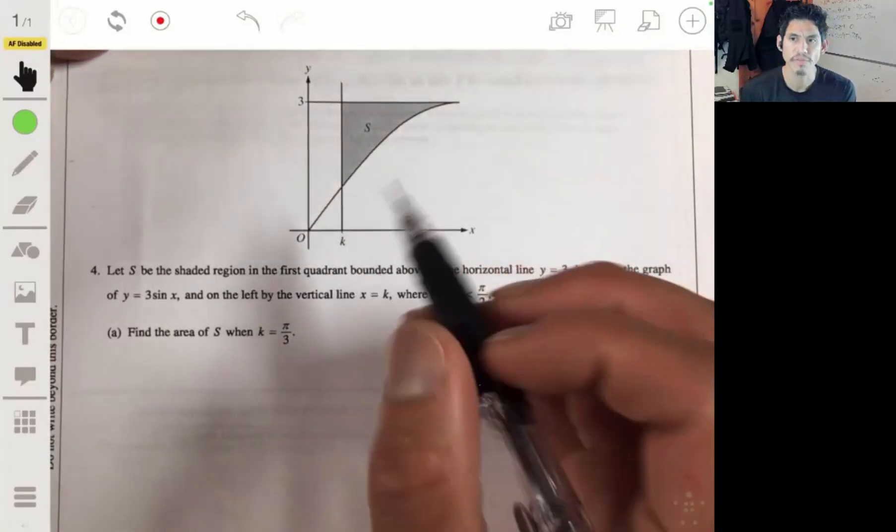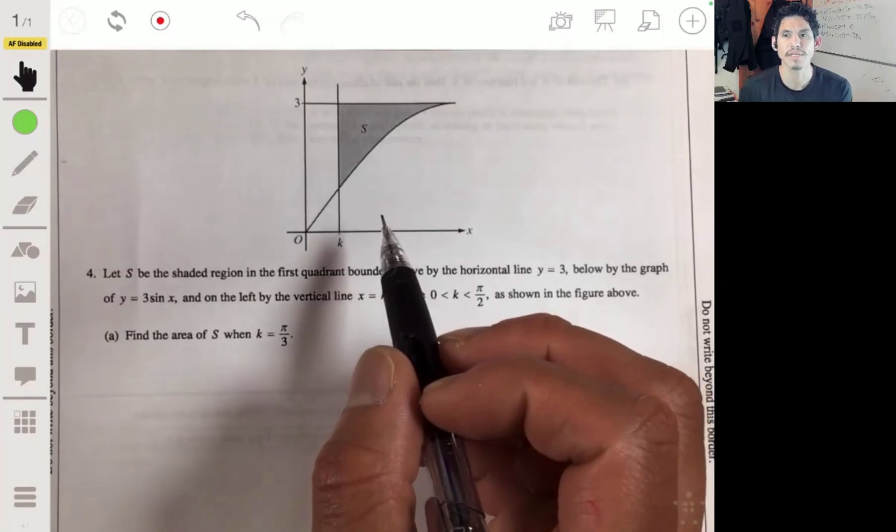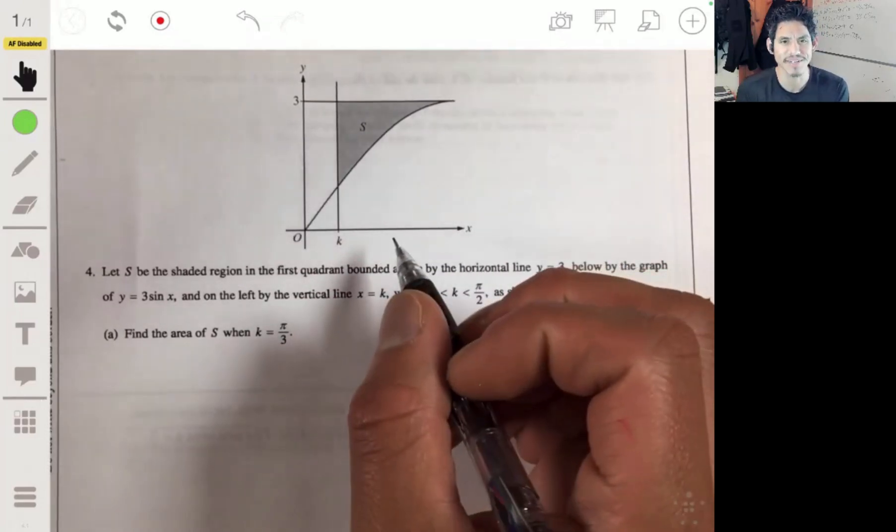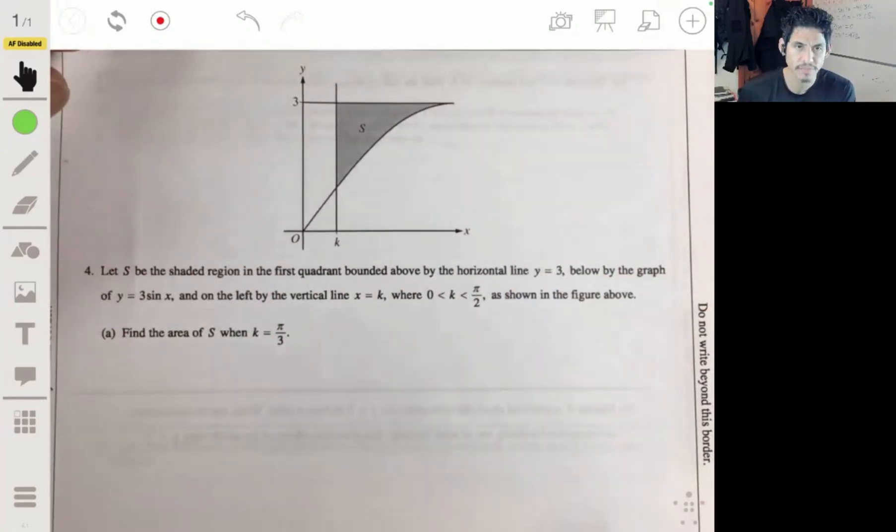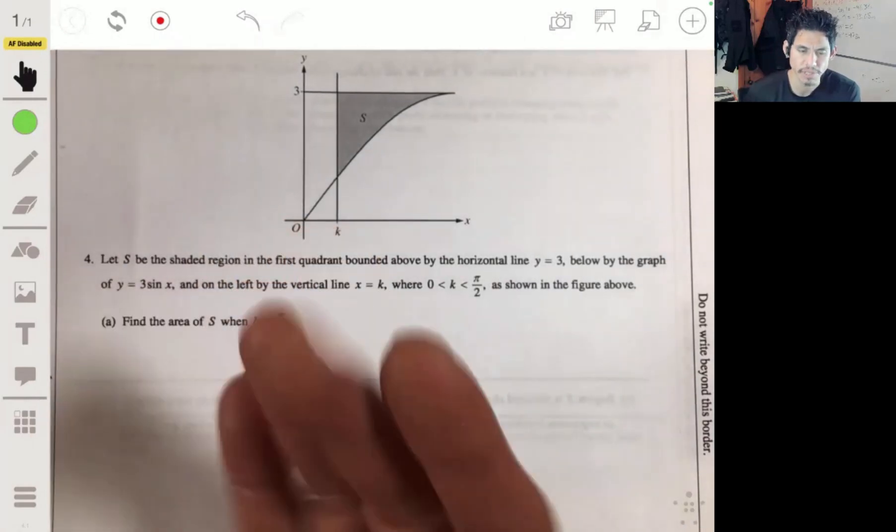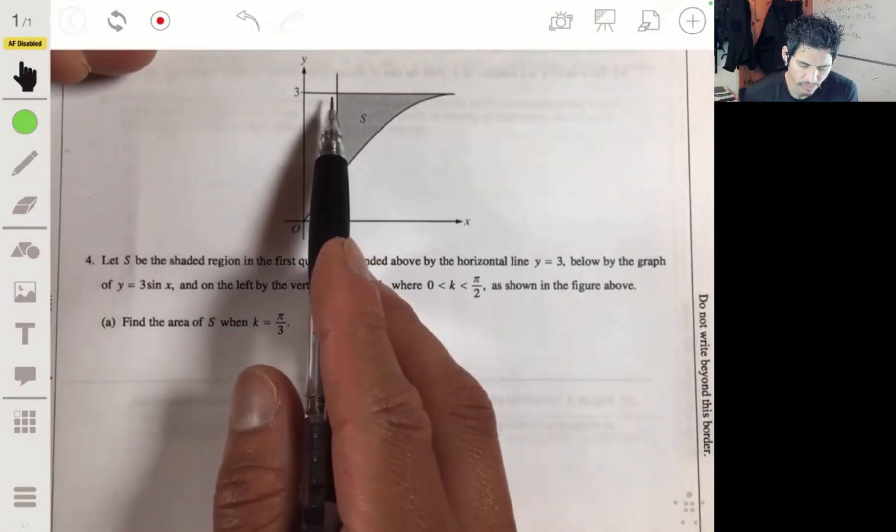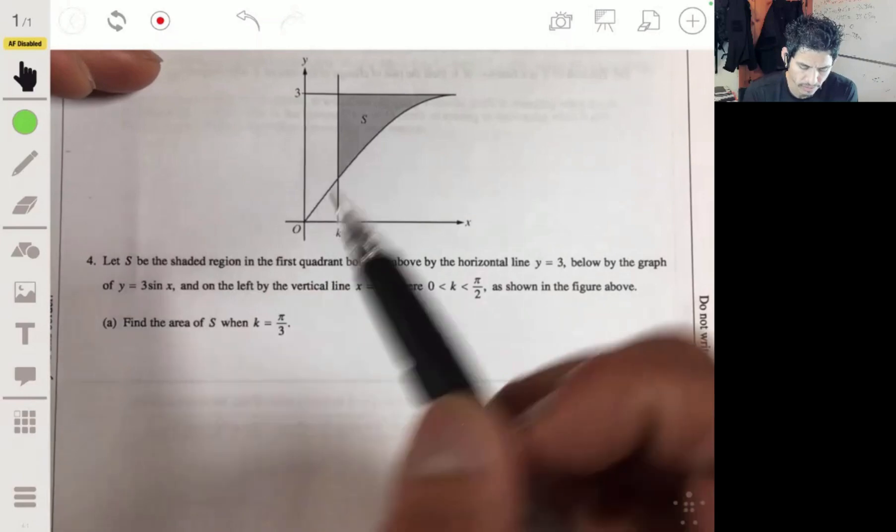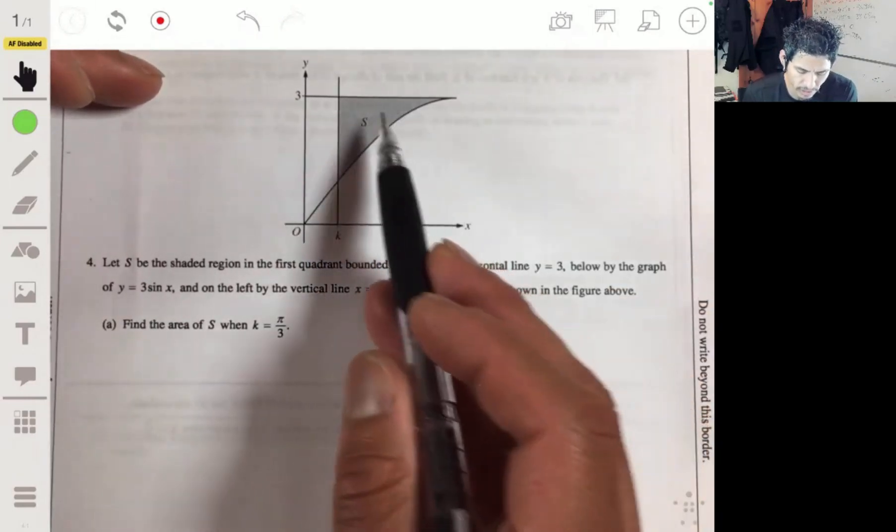All right, problem four from the free response section of 2016 AP Calc AB non-calculator. Let's see what we got, we got a shape, some sort of triangle, letter S.